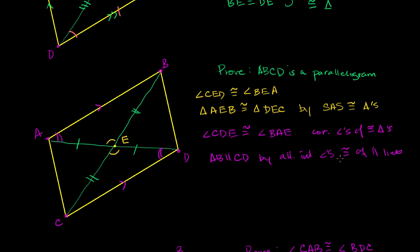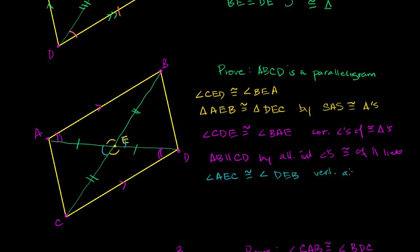We've just shown that these two sides are parallel. We can do the exact same logic to show that these two sides are parallel. We know that angle AEC is congruent to angle DEB — they are vertical angles. And then we see that triangle AEC must be congruent to triangle DEB by side-angle-side congruency.